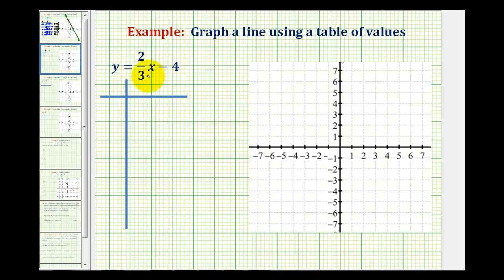We want to graph the line y equals 2/3x minus 4 using a table of values, which means we want to select values of x, substitute them into the equation, and then determine the corresponding y value. Every time we find an x and y value that satisfy the equation, it gives us the coordinates of a point that would be on the line.